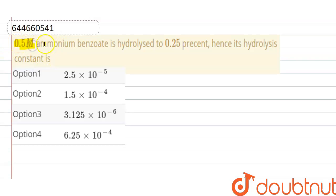0.5 molar ammonium benzoate is hydrolyzed to 0.25 percent. Hence, its hydrolysis constant is... So in this question, we have to find out the hydrolysis constant. The given here is that degree of hydrolysis (h) is 0.25 percent, that is 0.25 divided by 100.